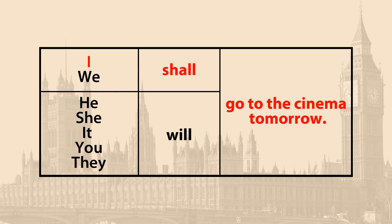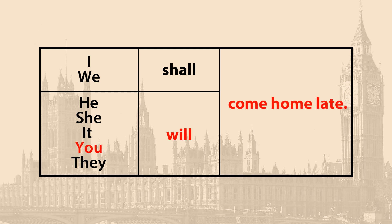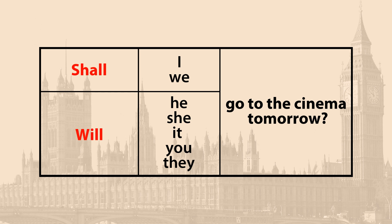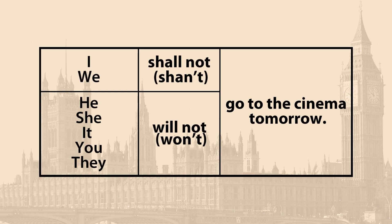Для составления вопросительного высказывания мы переместим will или shall на первое место в предложении. Остальная часть предложения останется без изменений. Для составления отрицательных высказываний к вспомогательному глаголу will или shall следует добавить отрицательную частицу not. Обратите внимание на особенности образования сокращённой формы отрицания: will not → won't, shall not → shan't.